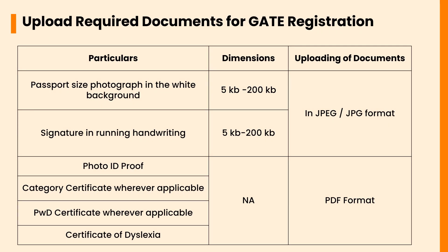The passport size photograph for GATE registration must be on a white background, with size between 5 KB to 200 KB, having 3.5 cm width and 4.5 cm height, with 60 to 70 percent face coverage, and pixel range from 240×320 to 480×640. The signature in running handwriting should have a size between 5 KB to 200 KB, with the signature area covering 70 to 80 percent of the image, pixel range from 80×280 to 160×560, and must be in black or dark blue ink only.